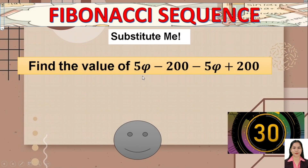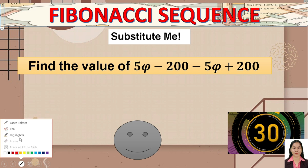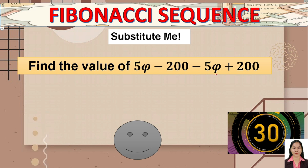Another example: if we have the expression 5 phi minus 200 minus 5 phi plus 200, we can simply combine like terms. 5 phi minus 5 phi cancels out, and negative 200 plus 200 also cancels out, so the result is 0 — no calculator needed.